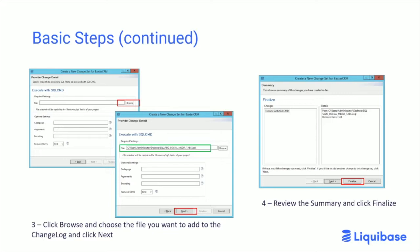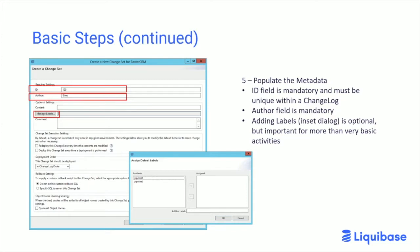Once you've got the file identified, go ahead and click the Finalize button. This is where you put metadata around the changeset. Every changeset has to have an ID and an author. You can also apply labels to the changeset to control when and where it goes — which database, at what time, based on how you want to control the deployment. For the basic task of getting a SQL file changeset into the system, you really only need the author and ID; labels are important but technically unnecessary for this task.